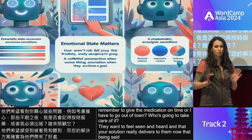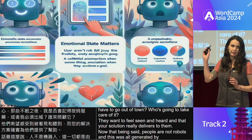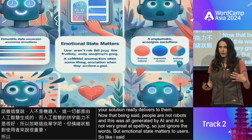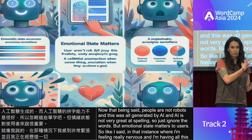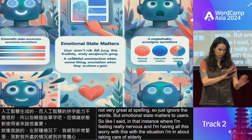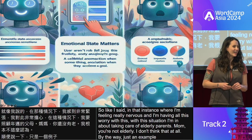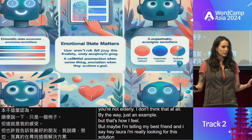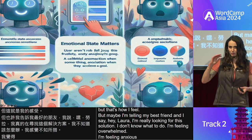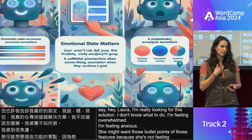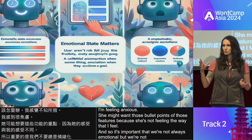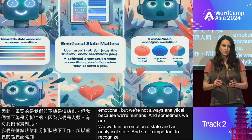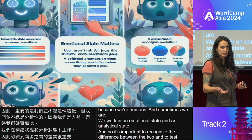People are not robots — emotional state matters to users. In a situation where I'm feeling nervous and overwhelmed, I want to feel understood. But my best friend hearing about the same situation might want bullet points of features because she's not feeling the same way I feel. We're not always emotional and not always analytical — we're humans and we work in both states. It's important to recognize the difference and to test how your audience responds to the way you're communicating with them.